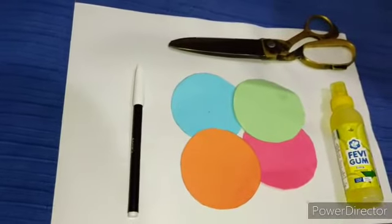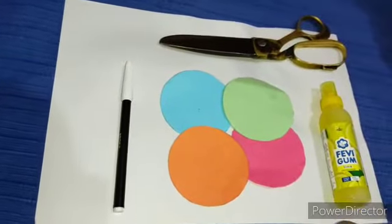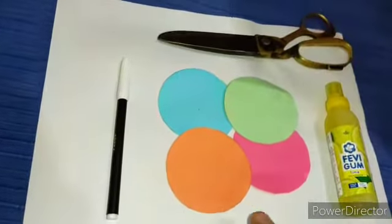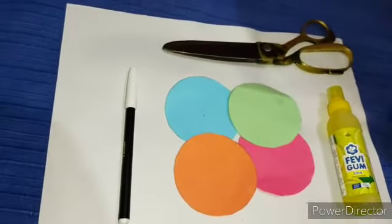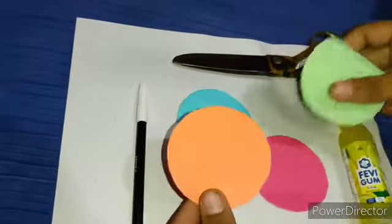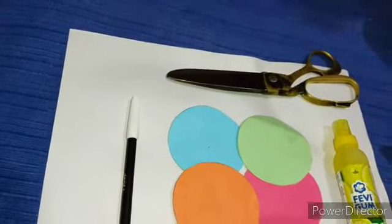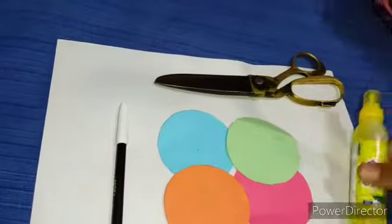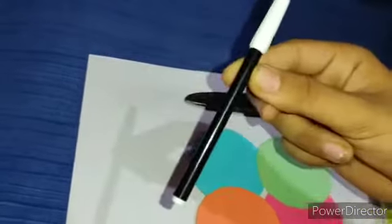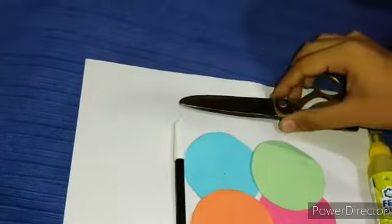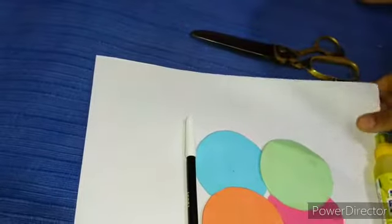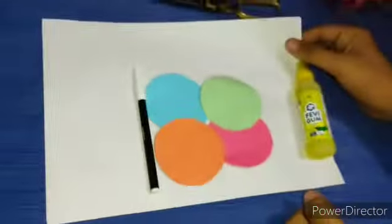Assalamu alaikum, welcome to my channel Hamd Khan Vlogs. You need four pieces of circles of different colors in the same size. You need Fevicol glue, a black sketch pen, scissors, and A4 sheet paper. You can also use paper, it's your choice.